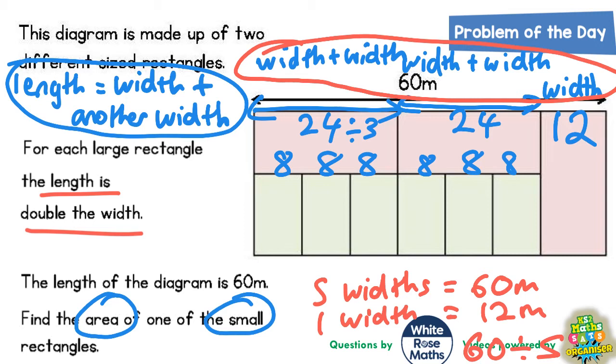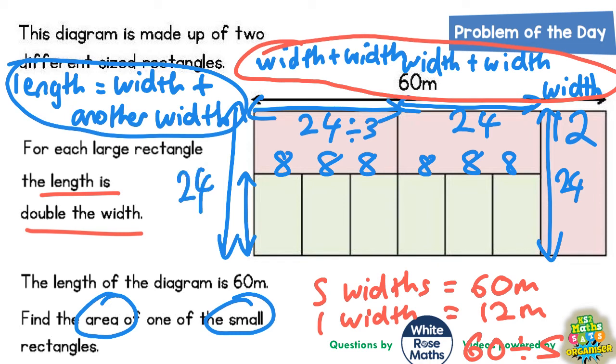Now the only thing we haven't found is the length of one of the smaller green rectangles. Well we do know that the whole distance of the diagram is the same as one of the lengths of the pink rectangles. And the length of the pink rectangles is 24. So if this distance is 24, it's 24 on this side.